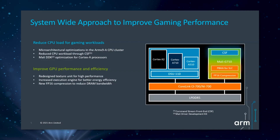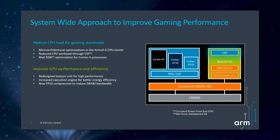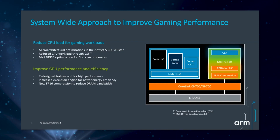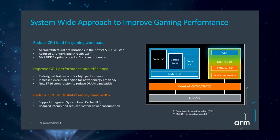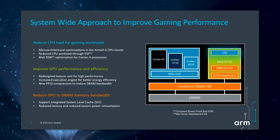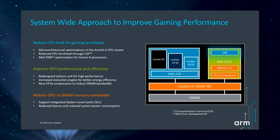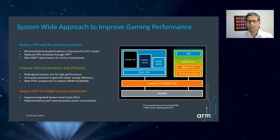The new texture units in the Mali G710 GPU handle demanding gaming content with ease. The redesigned execution engine results in better efficiency across the GPU cluster. Third, we focused on features that improve system efficiency. This is achieved by introducing a system level cache in our new interconnect CoreLink CI700, and by adding features such as FP16 compression capability in the GPU.